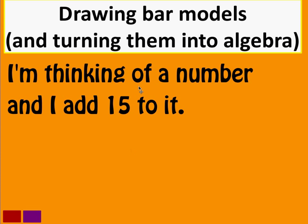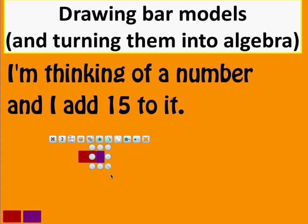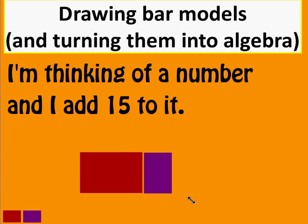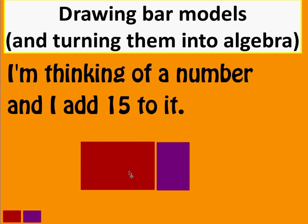First one: I'm thinking of a number and I add 15 to it. I'm going to use this red rectangle to represent the number that I'm thinking of, and I'm going to use the purple to represent the 15 that I've added to it. I'm not sure how big the number that I'm thinking of is, but it doesn't matter too much. So then we start to get what looks like a bar model.